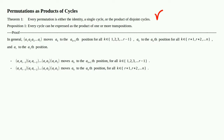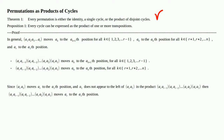Since the transposition (aᵣ a₁) moves aᵣ to the a₁ position, and a₁ does not appear to the left of (aᵣ a₁) in that product — it's the very last transposition on the right — then that product moves aᵣ to the a₁ position. But that's exactly what our original cycle does: it moves aᵣ to the a₁ position.